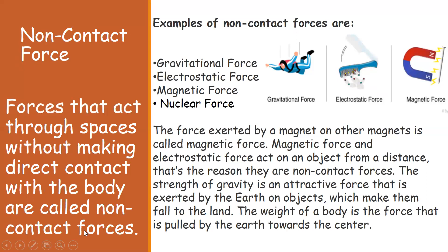Non-contact forces act through space without making direct contact with a body. Examples are gravitational force, electrostatic force, magnetic force, and nuclear force. With magnetic force, a magnet attracts ferromagnetic substances like nails and common pins even without contact, because the magnet creates a field around it. Anything within that field can be attracted or repelled. Regarding gravitational force, anything thrown upward always falls down due to Earth's gravitational force.